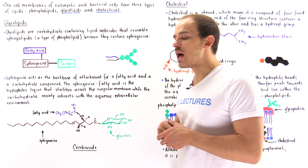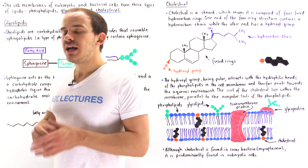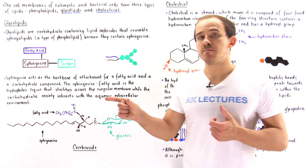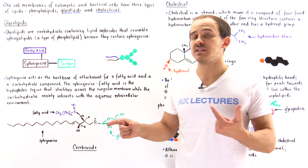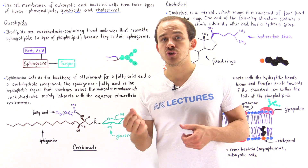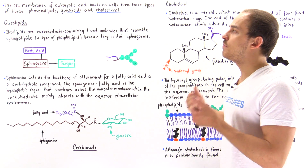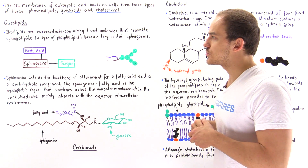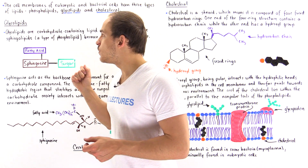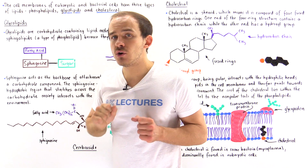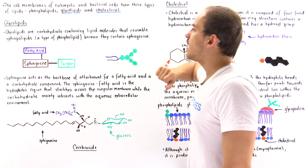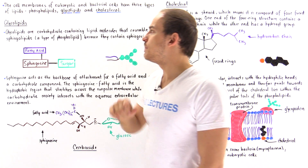Let's begin with glycolipids. Glycolipids are biological molecules that contain a lipid molecule attached via a glycosidic bond to a sugar moiety. That sugar moiety can be a single sugar or it can be some type of polysaccharide — many sugars. Glycolipids actually resemble a type of phospholipid called sphingolipids, because glycolipids also contain the sphingosine molecule just like sphingolipids do.